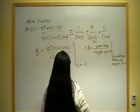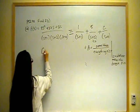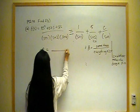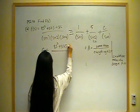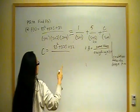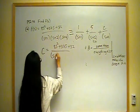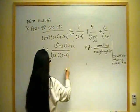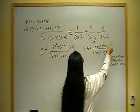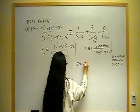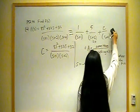Do the same thing for C. Our general formula: C is equal to, on top, the same thing — 8S squared plus 37S plus 32 — on the bottom, everything else that is not S plus 4, so that's S plus 1 times S plus 2. Evaluate it at whatever makes this zero, so S is equal to negative 4. When you evaluate that, you find C is equal to 2.